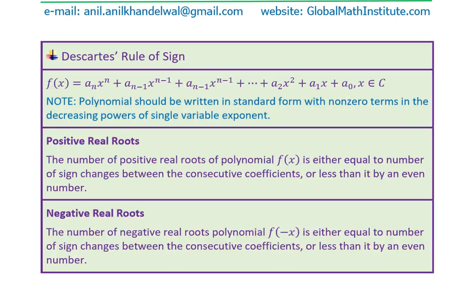The most important rule we are going to discuss is Descartes' Rule, which tells us about the sign of positive and negative roots. The polynomial should be written in standard form with non-zero terms in decreasing power of the single variable exponent. That is very important when applying Descartes' Rule.